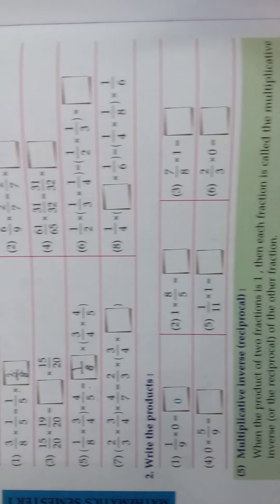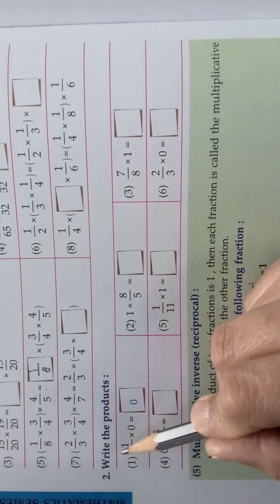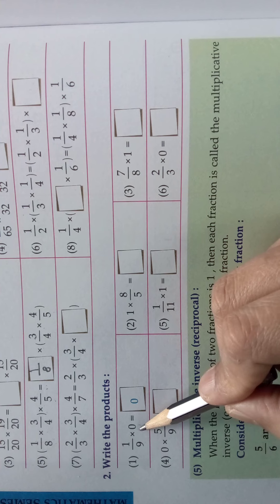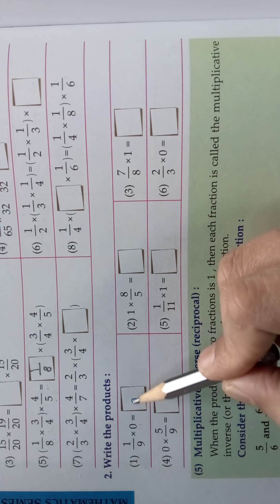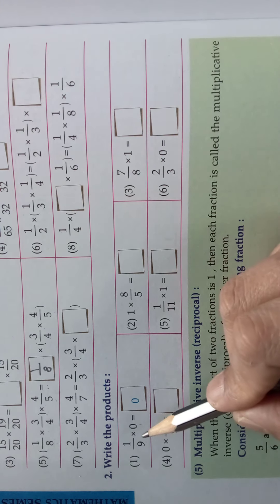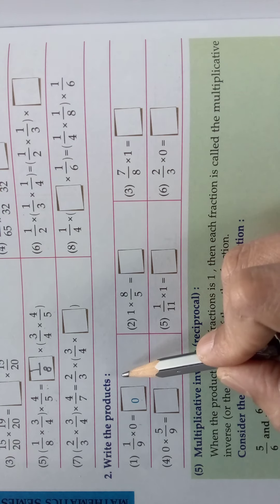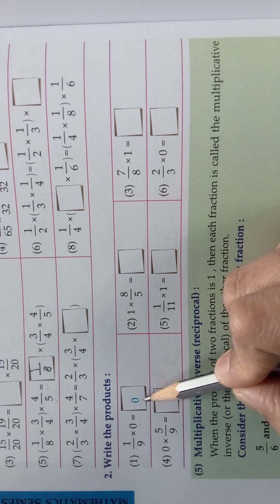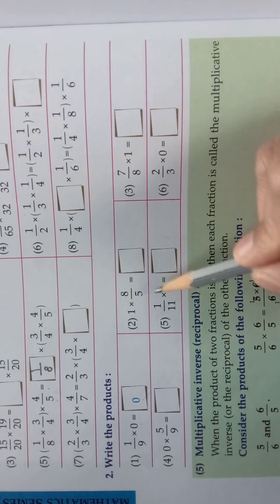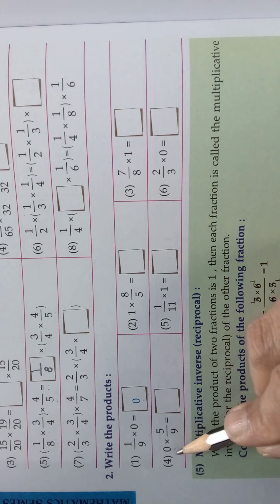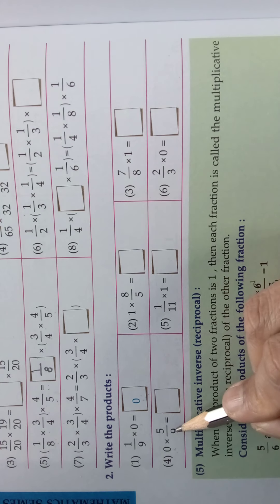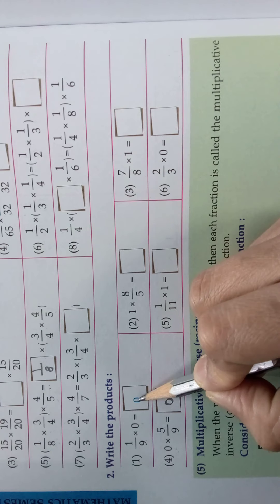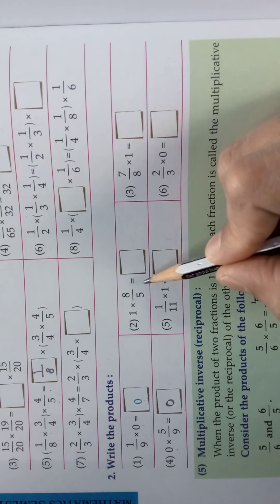Now we will see the next part — write the products. 1/9 × 0 equals 0. So if you multiply any number by 0, or if 0 is multiplied by any number, the product will be 0. Also, 0 × 5/9 is 0, and 1/9 × 0 is also 0.